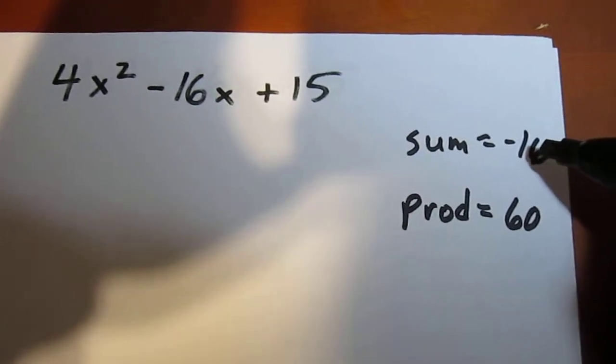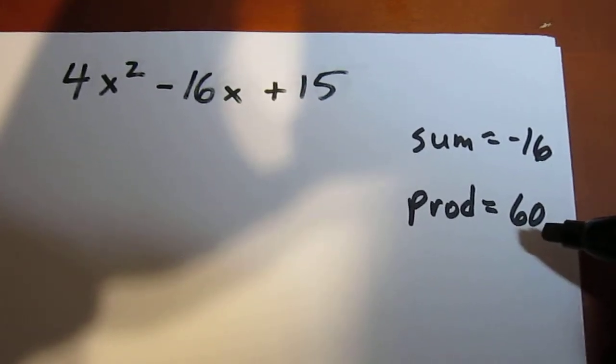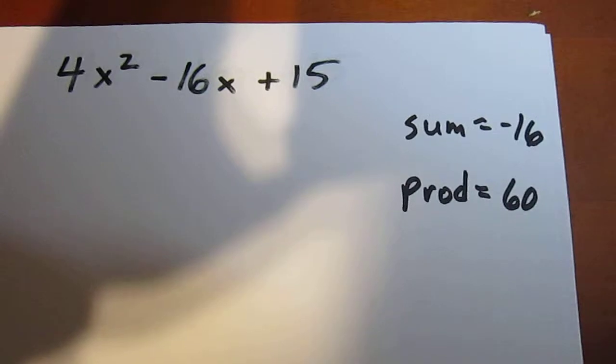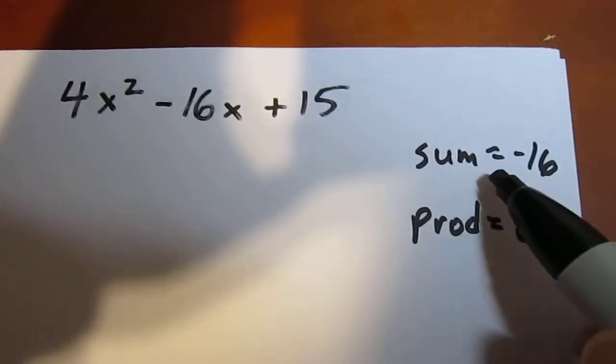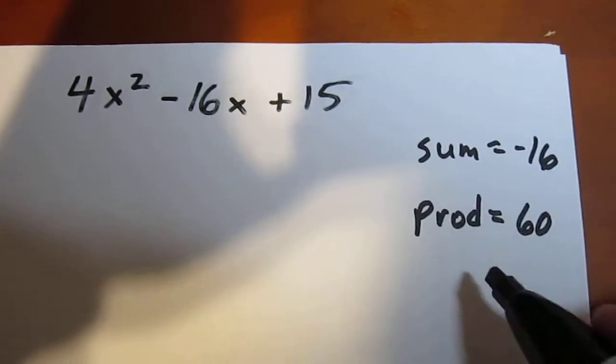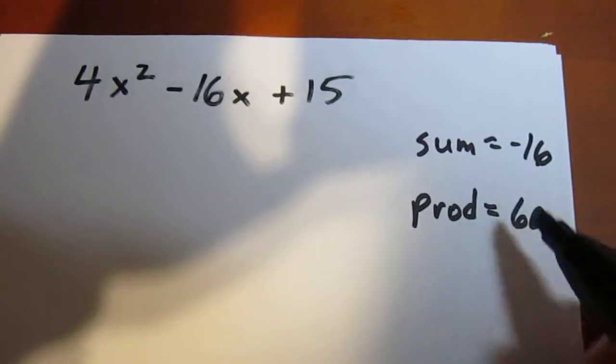Now the only way two numbers are going to add to a negative and multiply to a positive is if they're both negative. What two numbers add to negative 16 and multiply to 60? Well, those two numbers are negative 10 and negative 6.